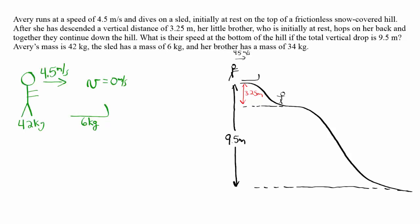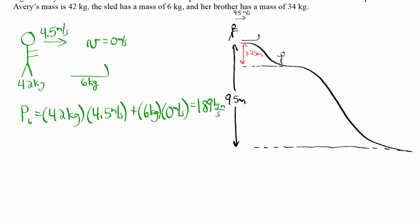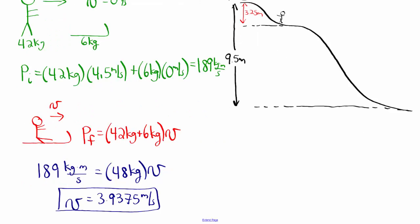The system is Avery and the sled. The initial momentum is Avery's momentum: 42 kilograms times 4.5 meters per second, plus the sled's momentum: 6 kilograms times 0 meters per second. So the initial momentum is 189 kilogram meters per second. After she jumps on, they move together at unknown speed v. The final momentum is 48 kilograms times v. Setting 189 equal to 48v, Avery and the sled together move at 3.9375 meters per second at the top of the hill.